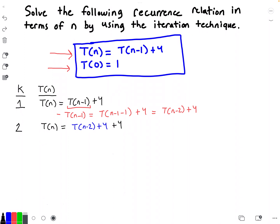To get to the third iteration, we need to know what T(n-2) is equal to — easy enough by plugging n-2 into the original equation, just like we did before for T(n-1). So T(n-2) is equal to T((n-2)-1) plus 4, and if we simplify that we get T(n-3) plus 4.